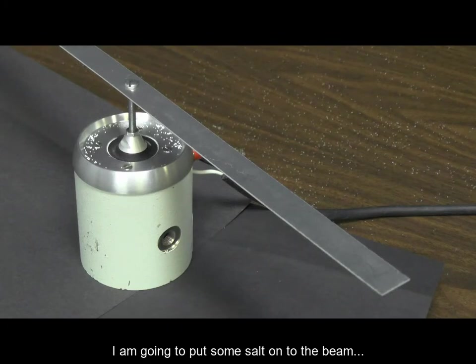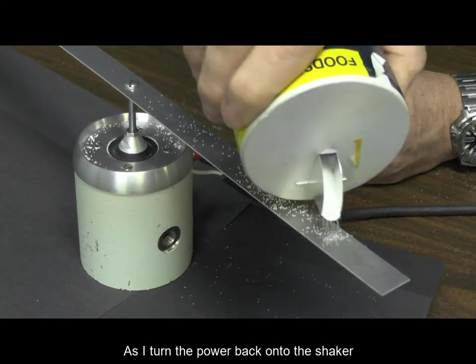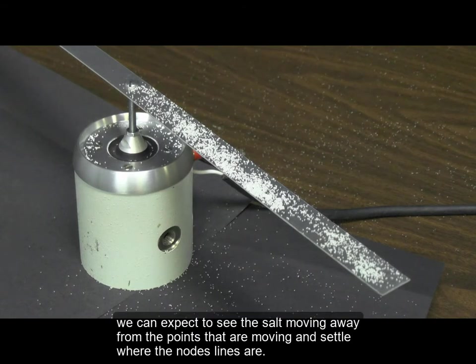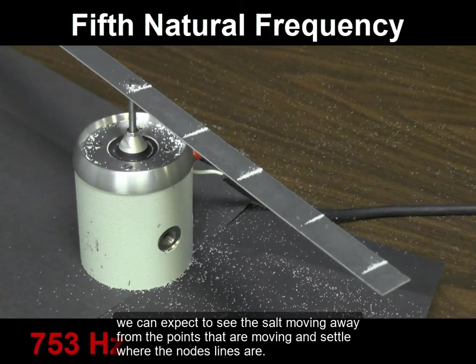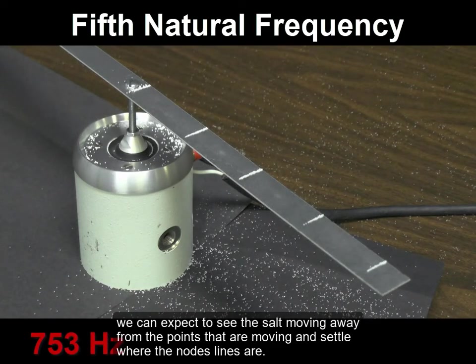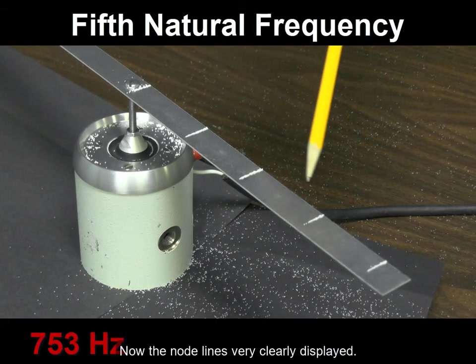I'm going to put some salt onto the beam. As I turn the power back onto the shaker, we can expect to see the salt moving away from the points that are moving and settle where the node lines are. Now the node lines are very clearly displayed.